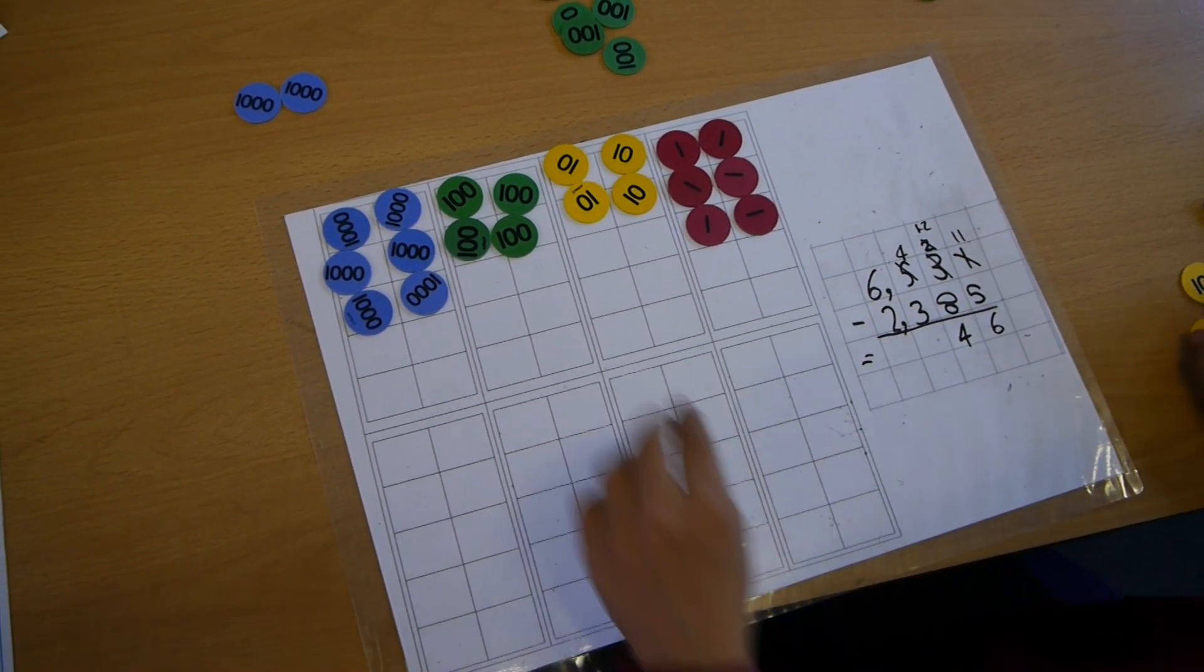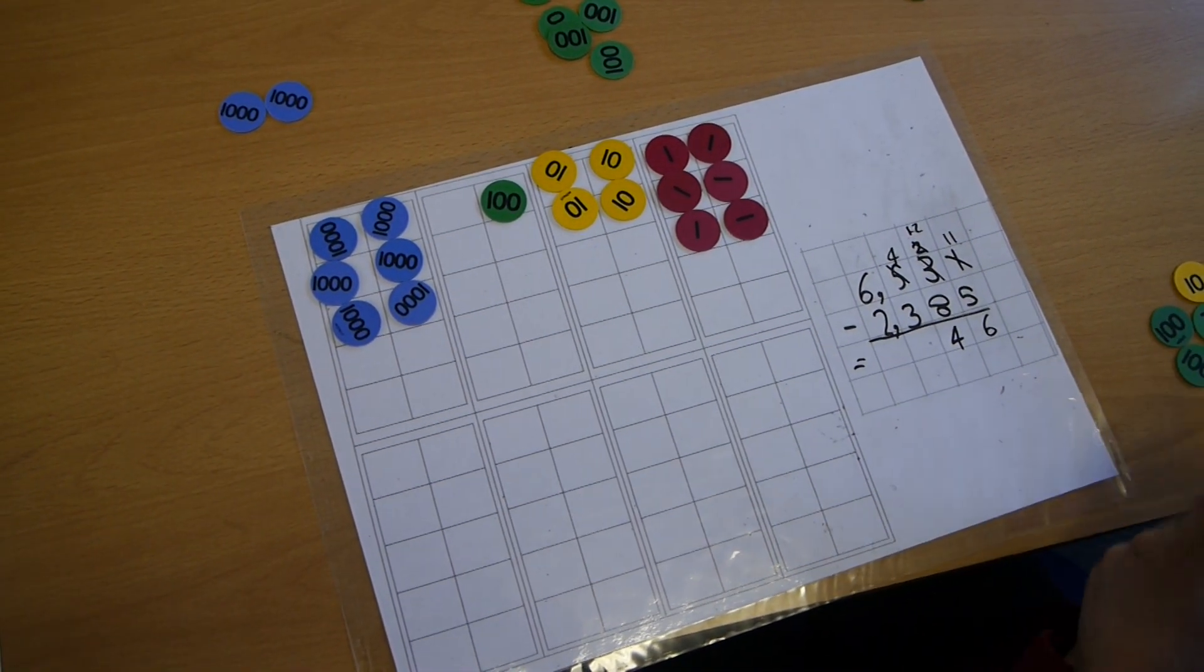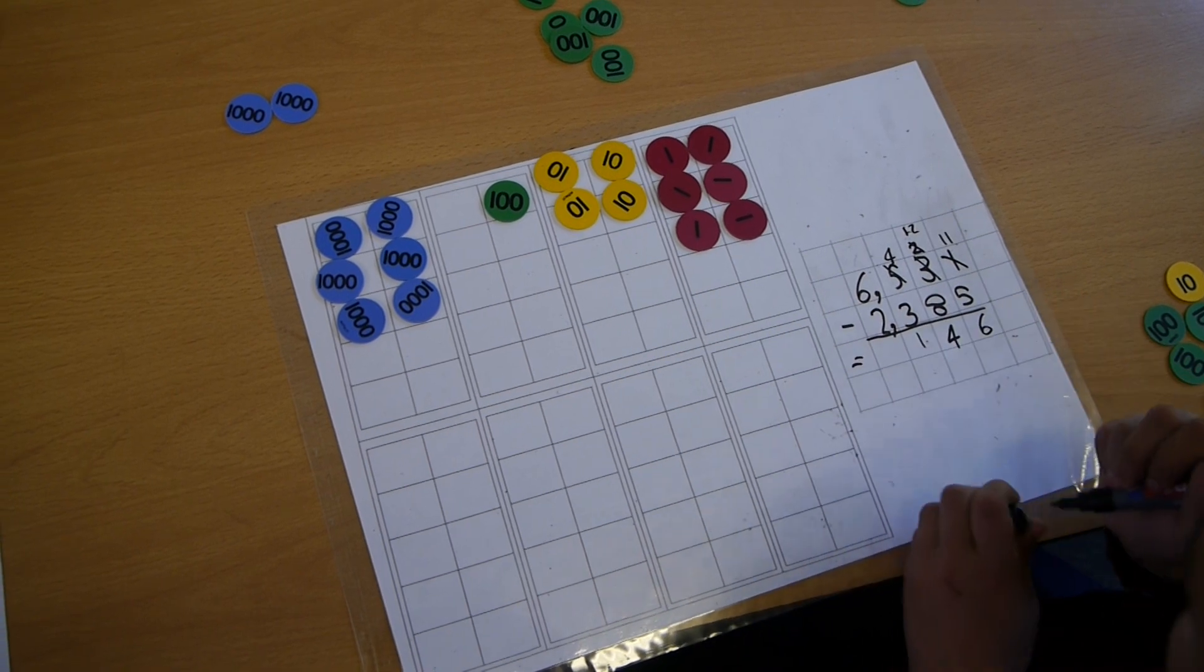Now we need to take away 3. We've got no problems here. So just take away normal 3. And that will give us our 100.